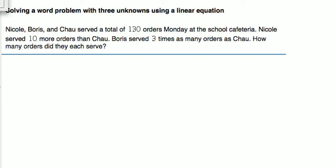Notice with all this information that we're given, we are not told anything about the amount of orders that Chao served. So we don't know anything about Chao's orders, therefore we're going to use the variable X to represent Chao's orders. We are told Nicole's orders numbered 10 more than Chao, so Chao's orders were X, and 10 more than that is simply X plus 10.